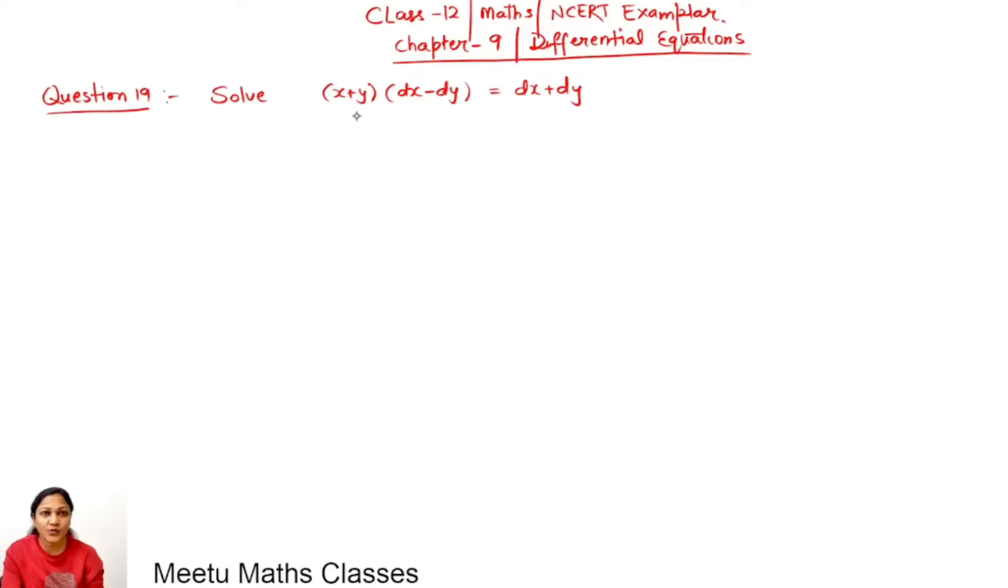Solve (x+y)(dx-dy) = dx+dy. To solve this differential equation, we are going to first convert our differential equation in the form of dy/dx equals a function, and for that we can first multiply x+y with dx and dy.